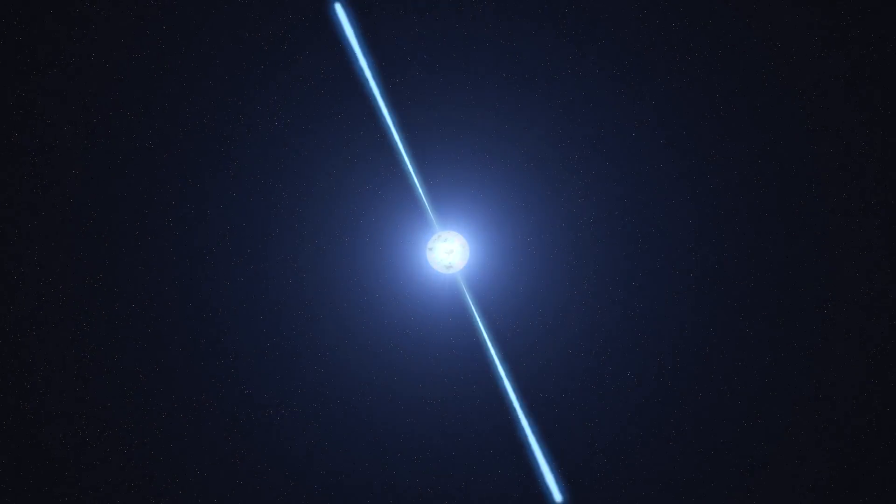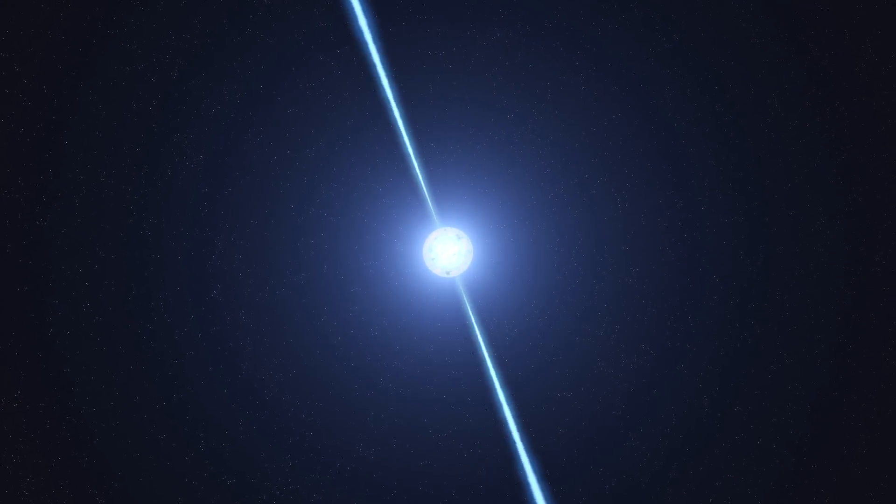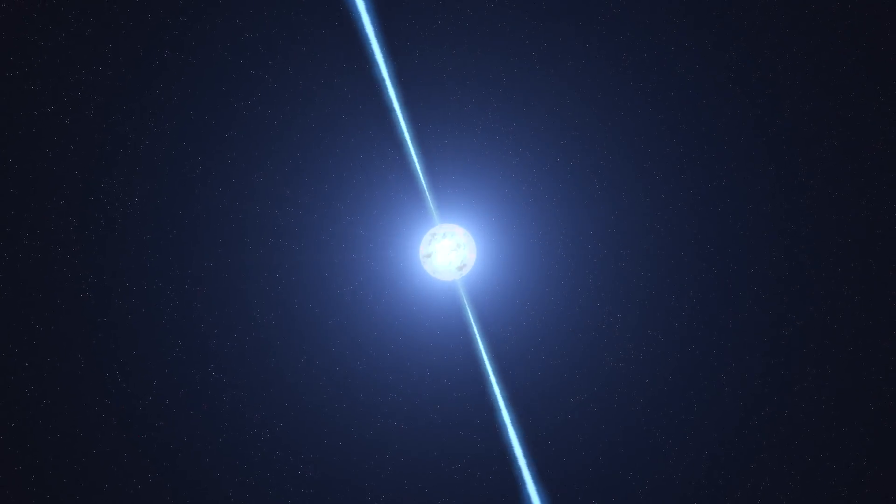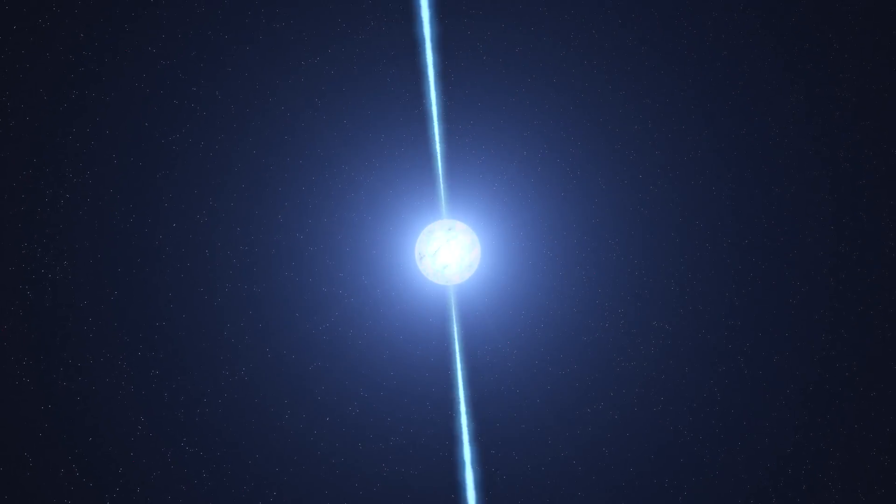A pulsar is the crushed core of an exploded star. Theorists have been trying to understand the details of how pulsars work ever since they were discovered in 1967, especially how they emit precisely timed pulses at radio-to-gamma-ray energies.